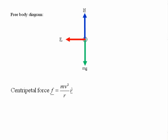M is the mass of the car, V is the car's speed, and R is the radius of the bend.